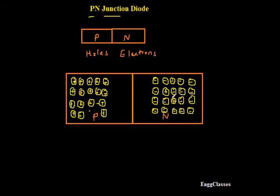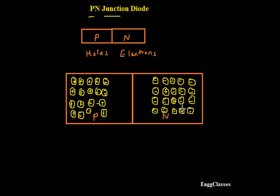In N-type there are many electrons and few holes, and in P-type there are many holes and very few electrons. Now the task is — I combine these two things chemically. Once I join P-type and N-type semiconductor, holes at the P-type are in majority and they diffuse into N-type, because the flow of energy is always from high concentration to low concentration. Holes are at very high concentration in P-type and at low concentration in N-type, so holes start moving from P-type to N-type semiconductor.